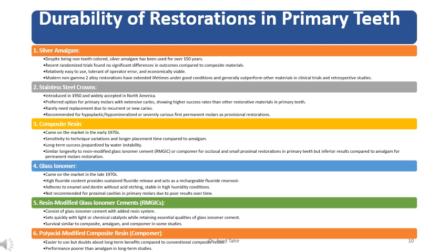Durability of restorations in primary teeth. Silver amalgam: despite being non-tooth-colored, silver amalgam has been used for over 150 years. Recent randomized trials found no significant differences in outcomes compared to composite materials. It is relatively easy to use, tolerant of operator variation, and economically viable. Modern non-gamma-2 alloy restorations have extended lifetimes under good conditions and generally outperform other materials in clinical trials and retrospective studies.